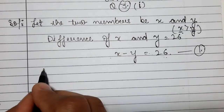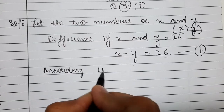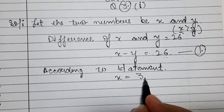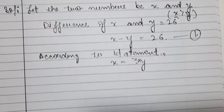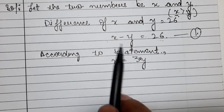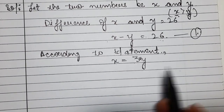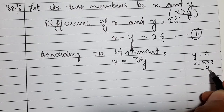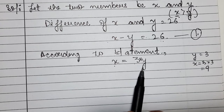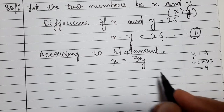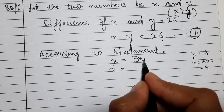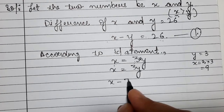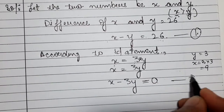Now, what is the second equation? According to the statement, one number is three times the other number. Three times means three multiplied by y. Since x is the bigger number, x equals three times y, that is 3y. Bringing 3y to the left side, we get x minus 3y equals zero. This is our second equation.